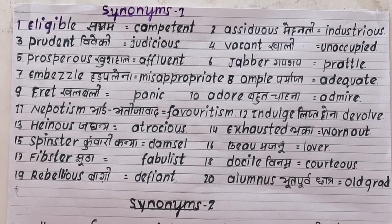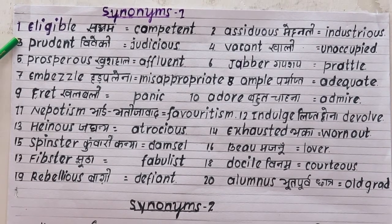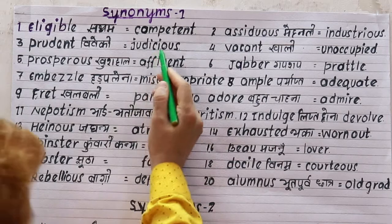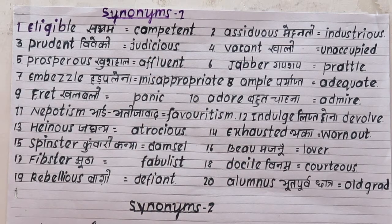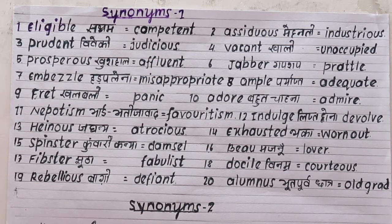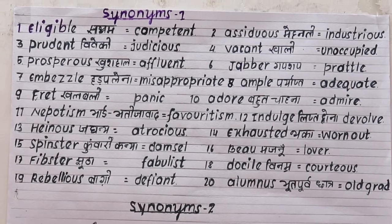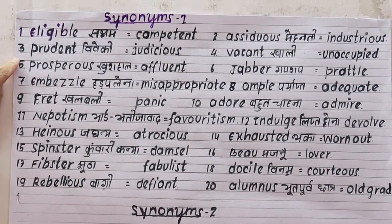First word is 'eligible' — it means you are able or qualified. A similar word is 'competent'. For example: I am eligible for this post, or I am competent for this post.